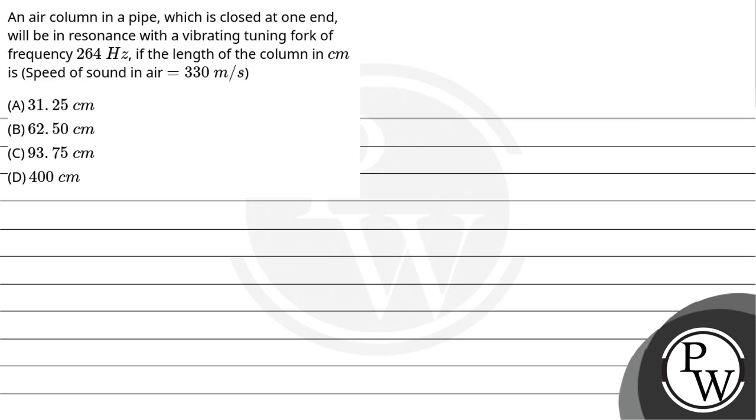Let's read the question. An air column in a pipe which is closed at one end will be in resonance with a vibrating tuning fork of frequency 264 hertz if the length of the column in centimeters is: option A 31.25, option B 62.5, option C 93.75, and option D 400. Speed of sound in air is given as 330 meters per second.